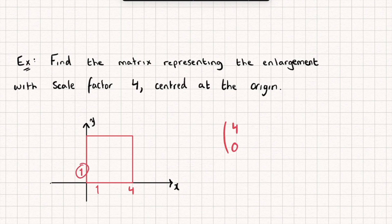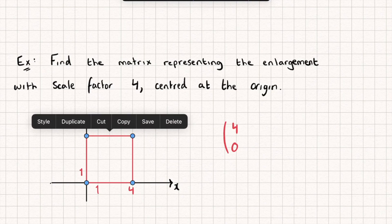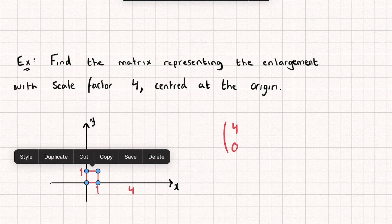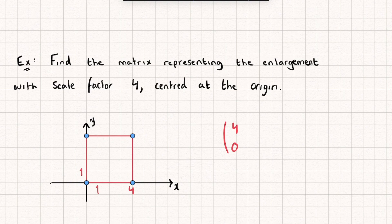My j unit vector, or the coordinate (0,1), has moved from (0,1) to being at the point (0,4), and so that will be my second column. The following matrix, which we'll call M, represents an enlargement scale factor four centered at the origin.